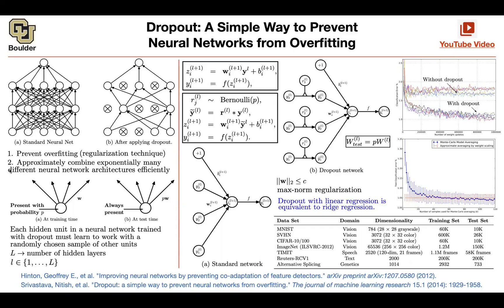Now, you have two options. In the end, you want to put your neural network into production. When you're putting a neural network in production, you don't want things to be random — each time giving you a different probability. For instance, if you take a goldfish image and push it through a random neural network, it's perhaps going to give you random probabilities in the end.